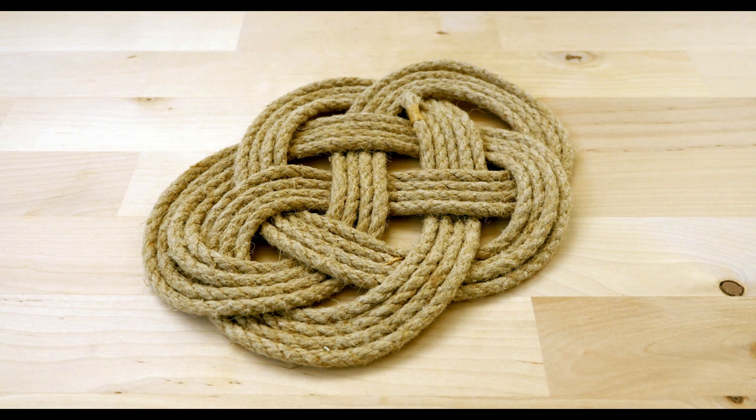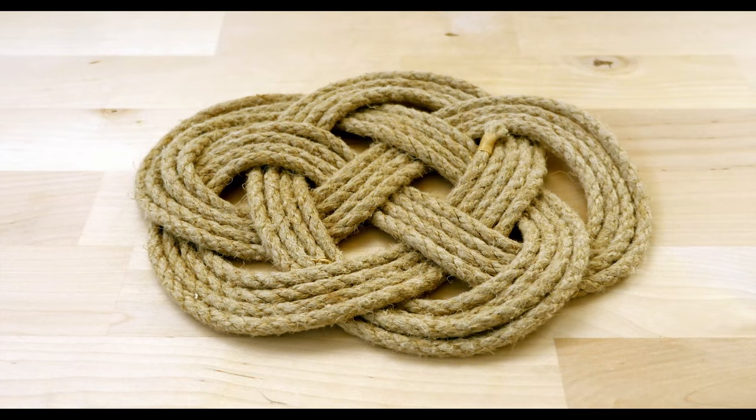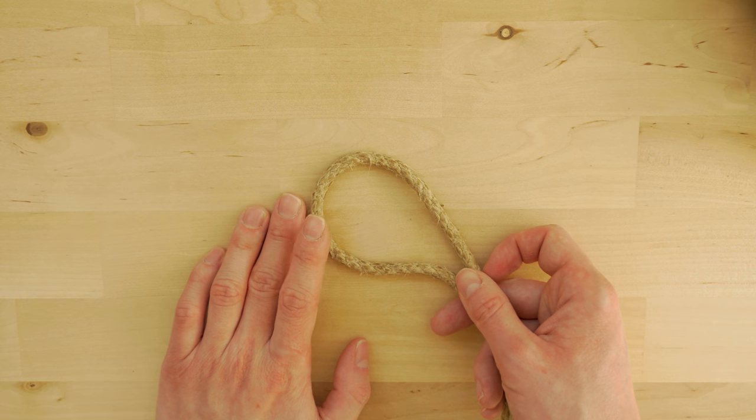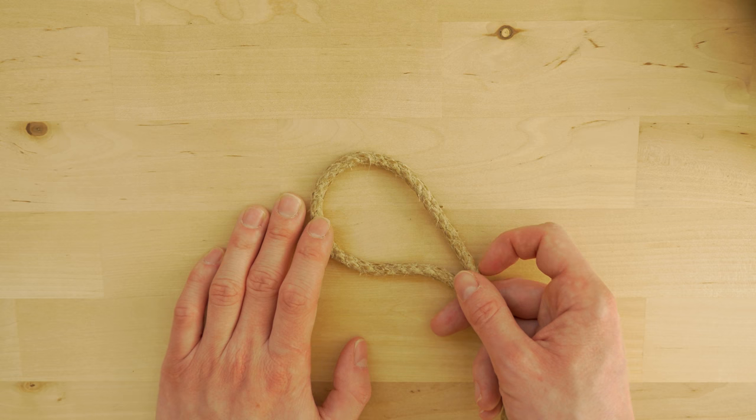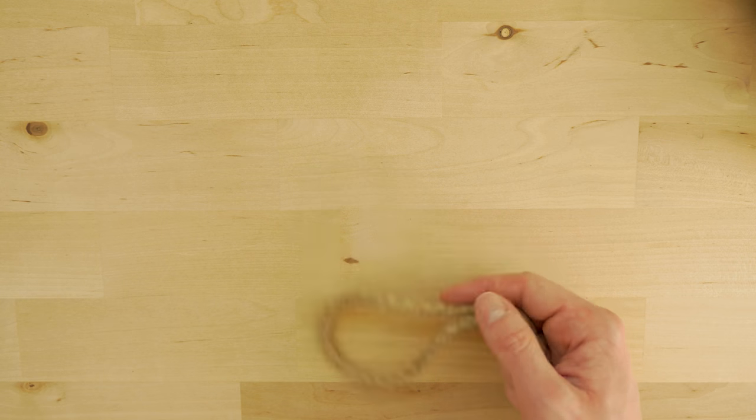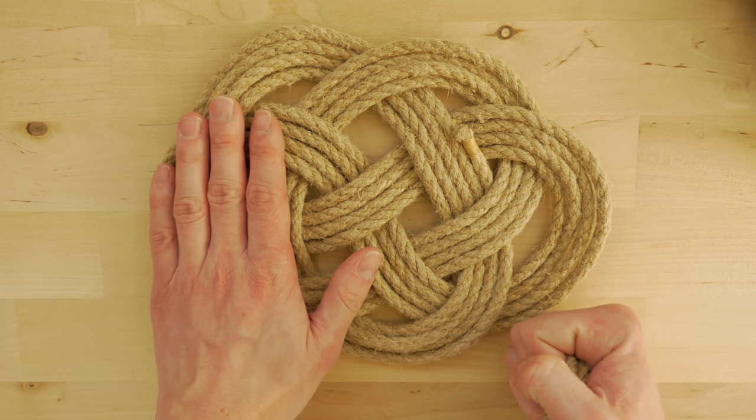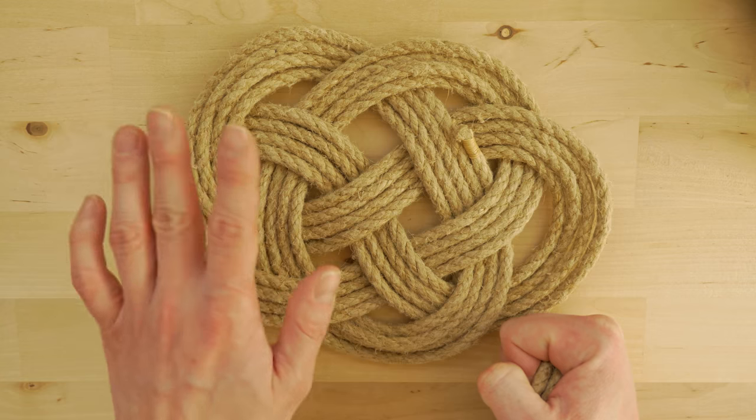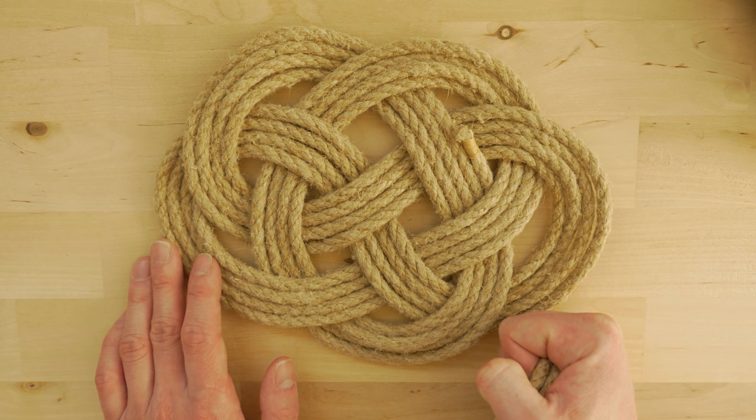I'm going to show you how to tie a rope mat using some hemp rope. I have some hemp rope here, and this is a quarter inch hemp rope. I'm using about 20 feet of this rope, which is enough for a 4-pass version of this mat. A 5-pass version, for example, would require about 4 feet more of your rope.